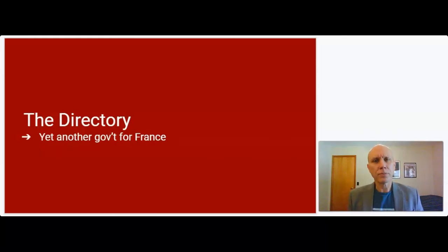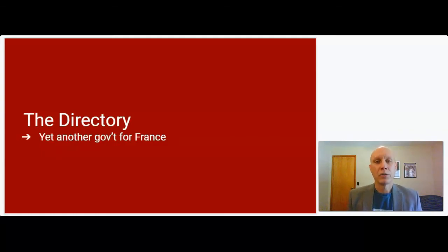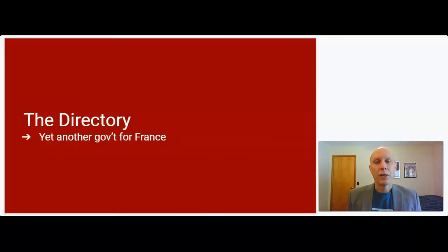Before going into some of the details on the Directory itself, I just want to recap where France has been as far as the different types of government they had. If you go back to the summer of 1789, France was an absolute monarchy where you had a king with total power. Then the revolution begins and they transition away from absolute monarchy to officially becoming a limited constitutional monarchy by the early fall of 1791.